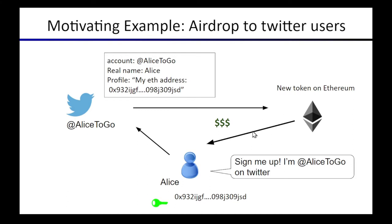You might spot the potential to use an oracle here instead. If we didn't want to have the developers — a centralized party in the middle — go and access Alice's Twitter account to see which address she's claiming, an oracle could be used instead. An oracle would sit between the smart contract that's issuing the token and would fetch Twitter profiles to see which Ethereum addresses are in there, and allocate a portion to that address.